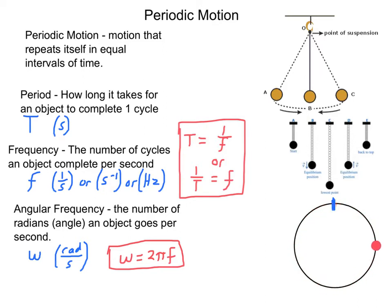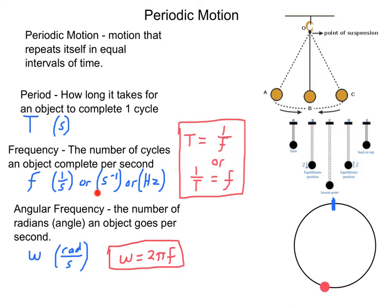That'd be one hertz, because the units here are hertz. Units for period are seconds, because 'how long' means time, so seconds. Frequency is the number of cycles per second — one over seconds — another way of writing that is seconds to the negative one, and we call that the hertz, Hz.